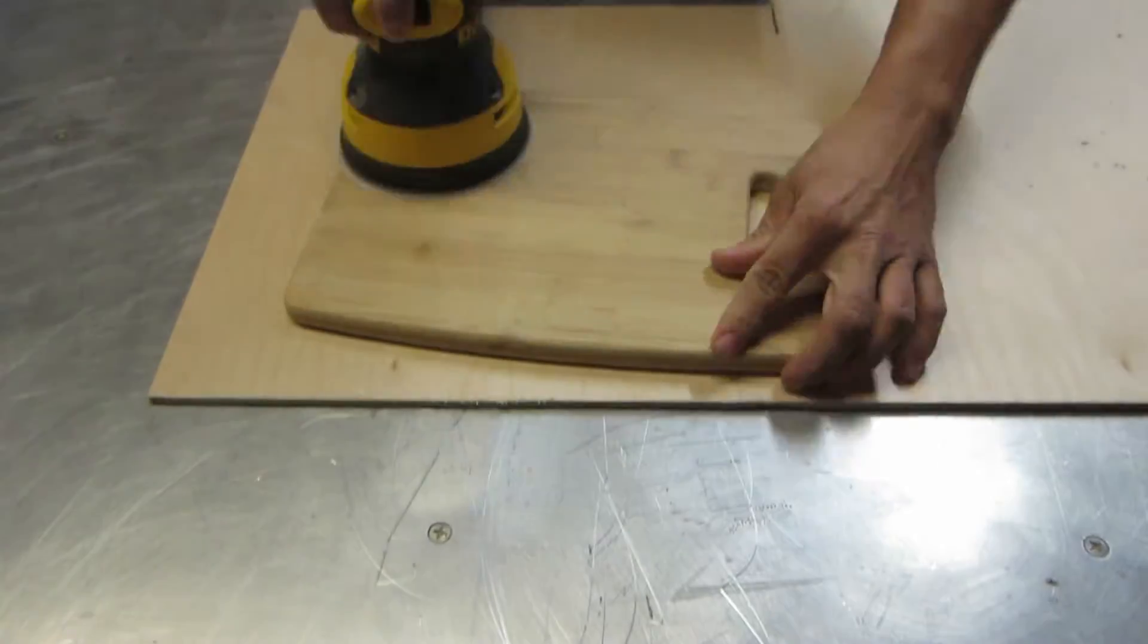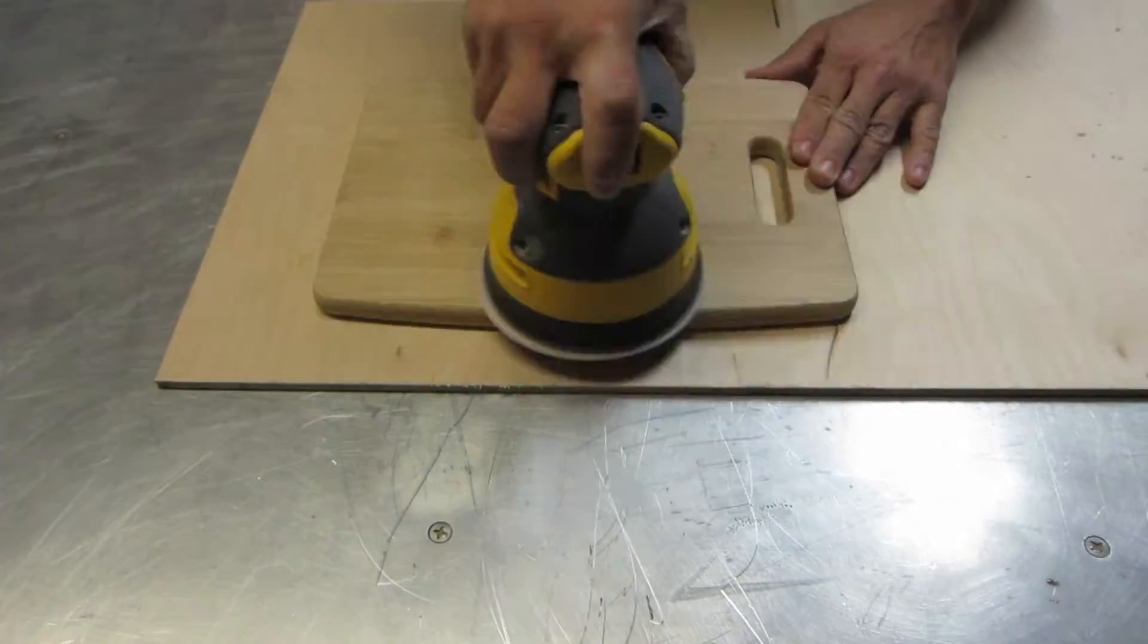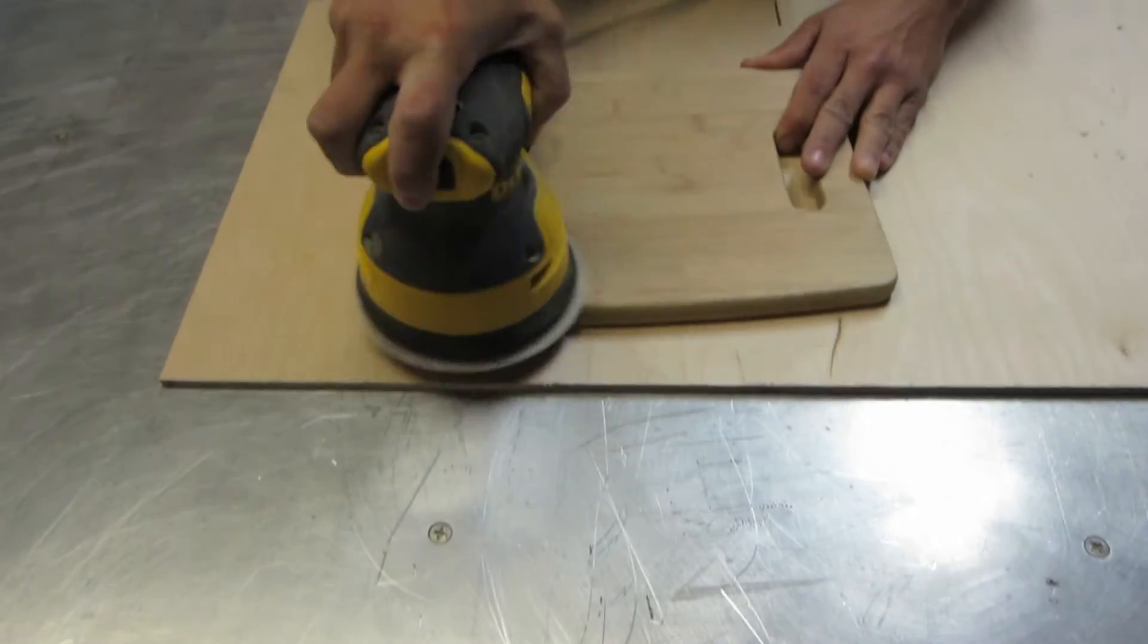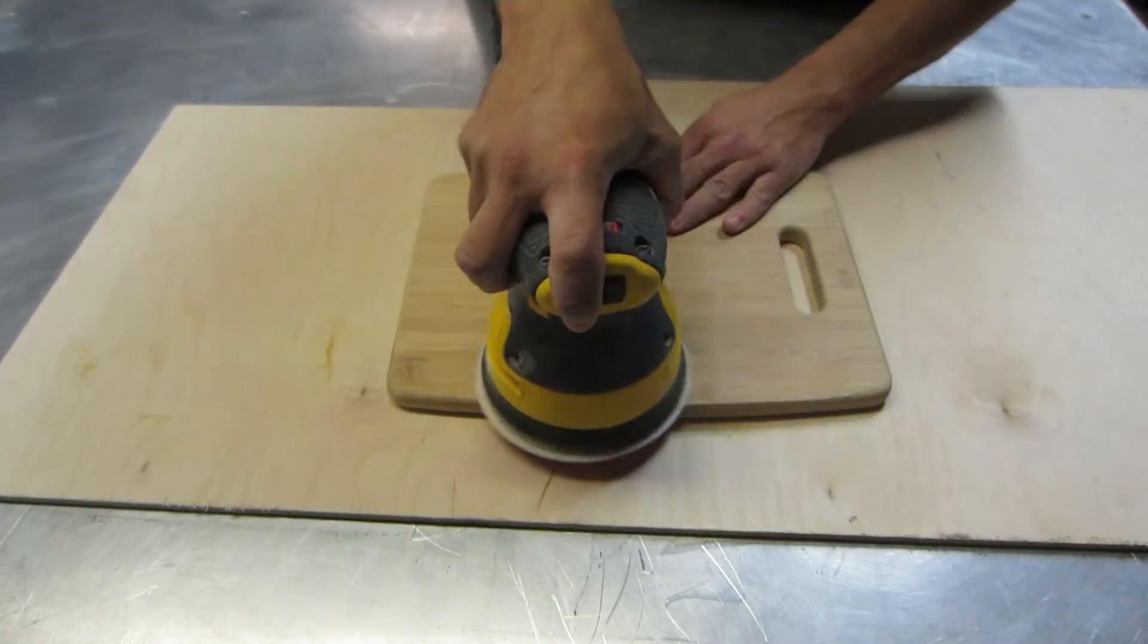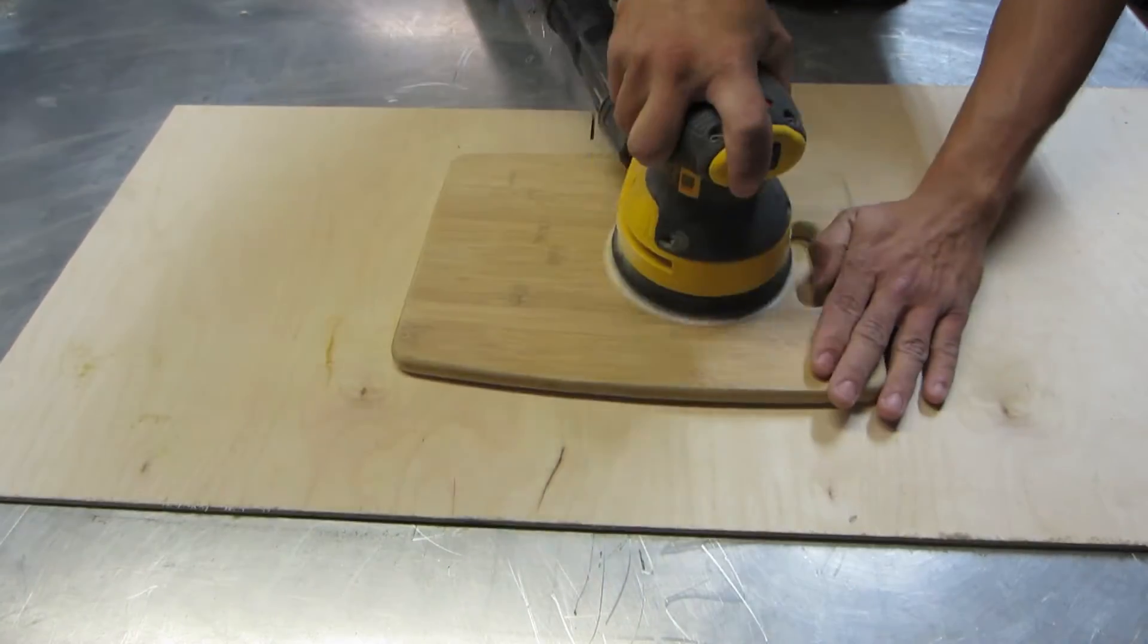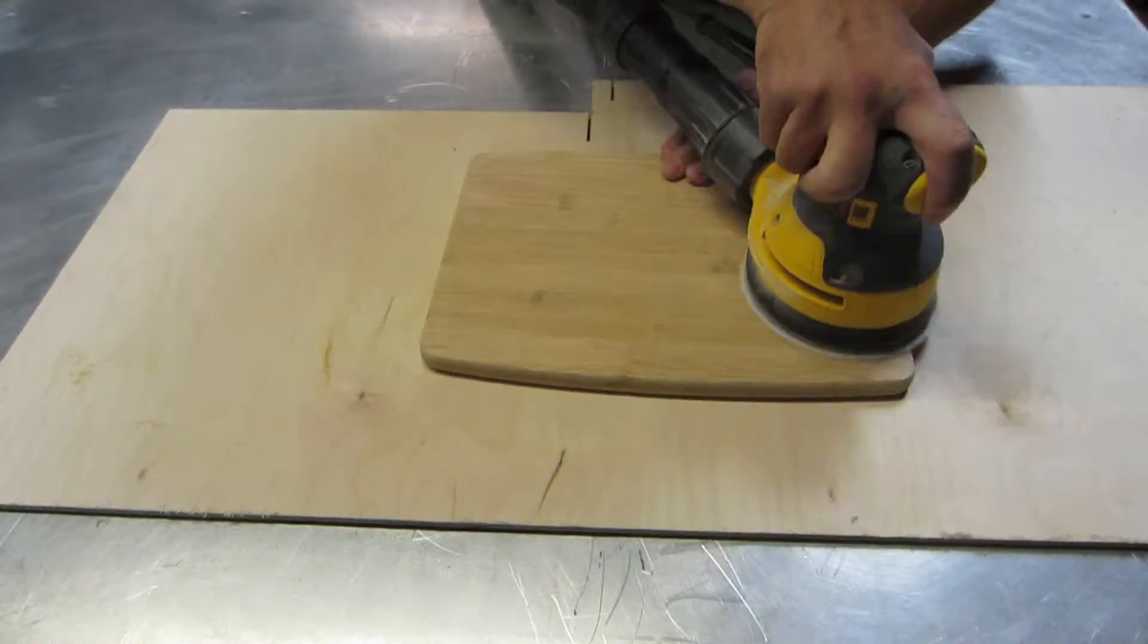So all you really have to do with wood cutting boards is sand them. Here you can see me using 100 grit sandpaper and then I move up to 220 grit sandpaper on a random orbit sander. These sanders are great, save a lot of time and a little bit of elbow grease.